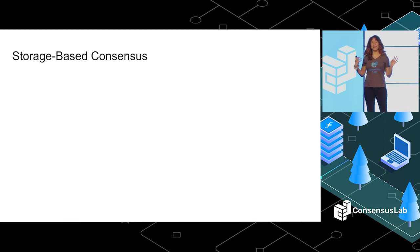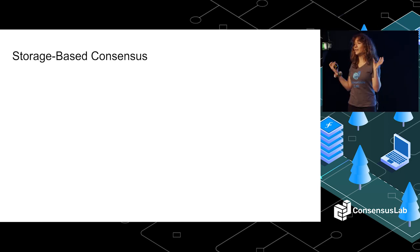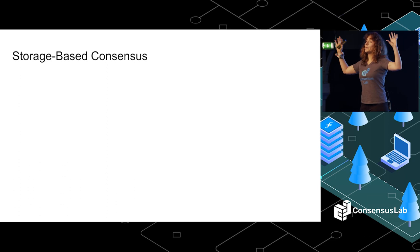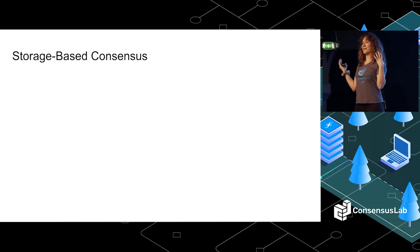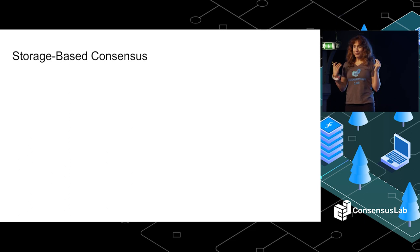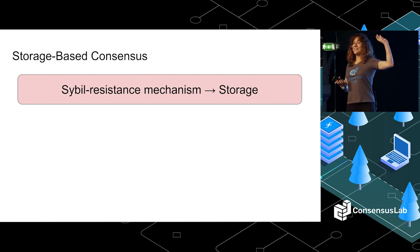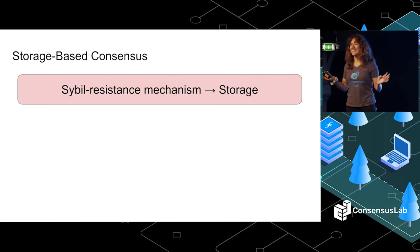Let me take one step back and think about Filecoin. Filecoin is a storage-based consensus protocol. We can think of it as different layers. The top layer is really the Sybil resistance mechanism. In Filecoin, this is based on storage. We solve Sybil attacks by asking participants to commit some storage to the chain, using really cool cryptography that colleagues at CryptoNetLab are designing.